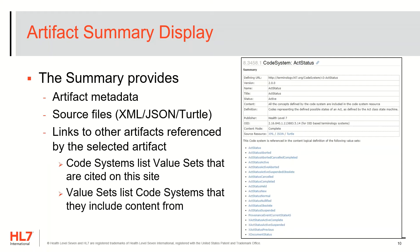In addition to metadata information like URL, version, name, OID, and others, the summary section provides links to source files for the artifact in XML, JSON, and Turtle formats. This may be useful for people wishing to download a copy of a single artifact without having to download the entire package of content. The summary section also includes links to other artifacts referenced by the selected artifact. For code systems, the references section will link to the referenced value sets cited on this set of pages. For value sets, the section will list code systems that the value set includes contents from.